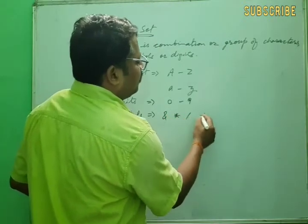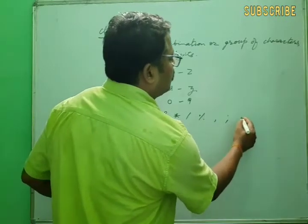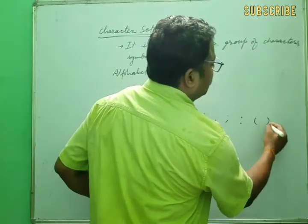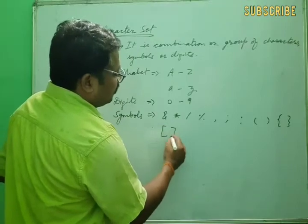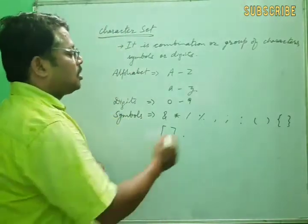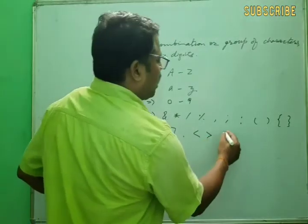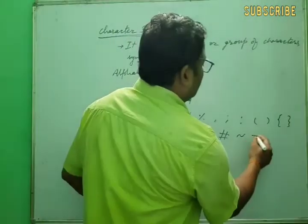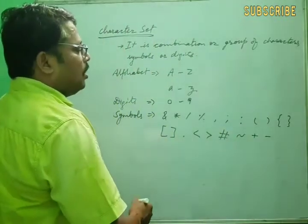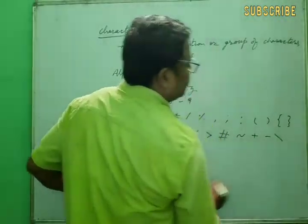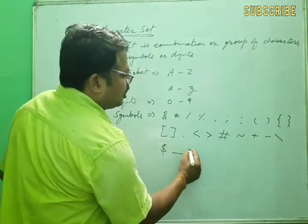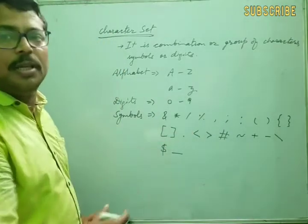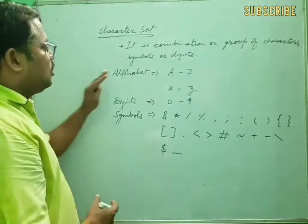More symbols include the dot operator, greater than, hash, tilde operator, plus, minus, forward slash, backslash, dollar, and underscore. These are all the symbols we use in C++ as part of the character set. We use all these characters, digits, and symbols to write programs, just like we write statements in the English language.